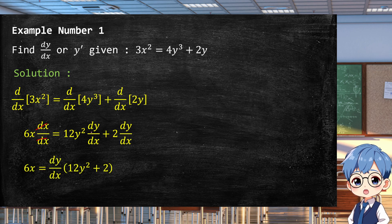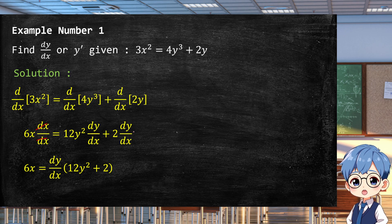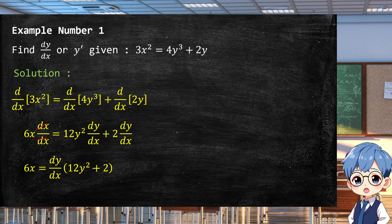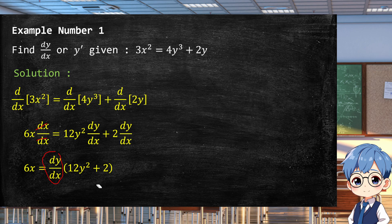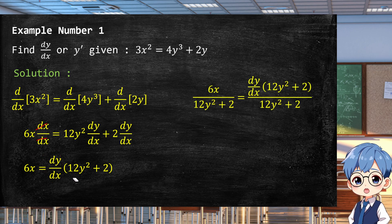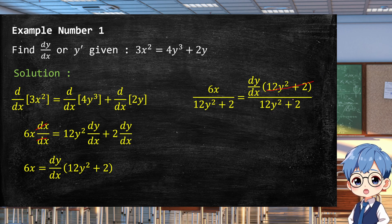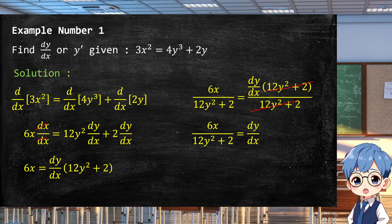We factor out dy/dx because we need to isolate it. Factoring out dy/dx gives us 12y² + 2. Since we are looking for dy/dx only, we divide everything by 12y² + 2, and we cancel out 12y² + 2.